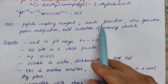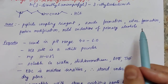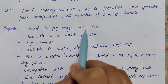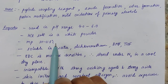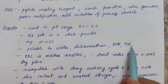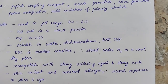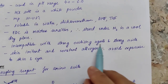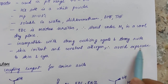Regarding properties: this reagent only works in the pH range of 4 to 6. In HCl salt form it is a white powder with a high melting point of 111 to 113°C. It is soluble in water, dichloromethane, DMF, and THF (tetrahydrofuran). EDC is moisture sensitive and must be stored under nitrogen gas in a cool, dry place. It does not work with strong oxidizing agents or strong acids, and it is a skin irritant and contact allergen, so exposure to skin and eyes must be avoided.